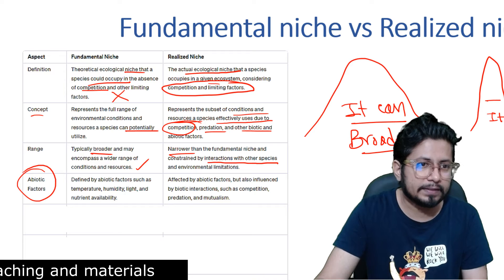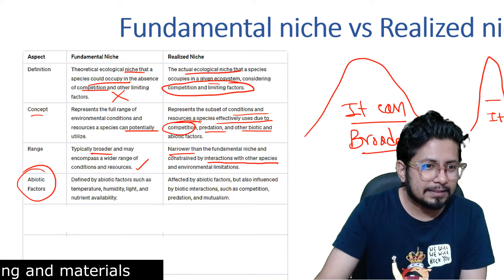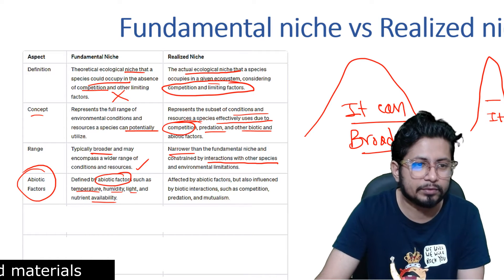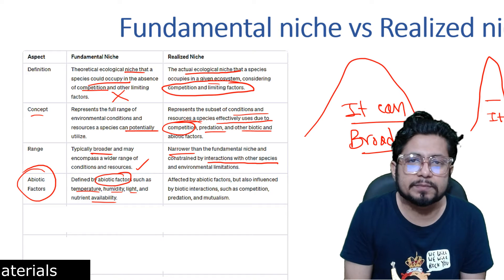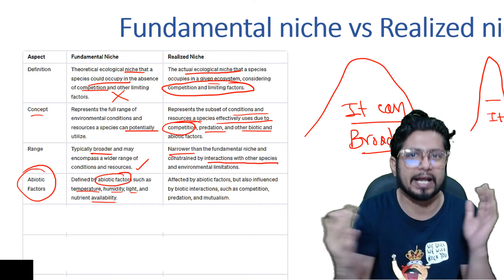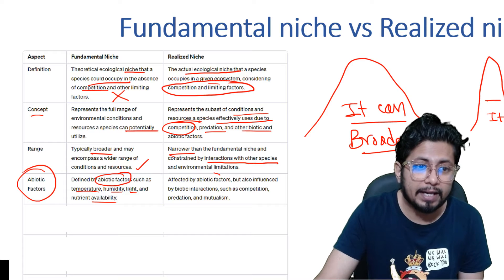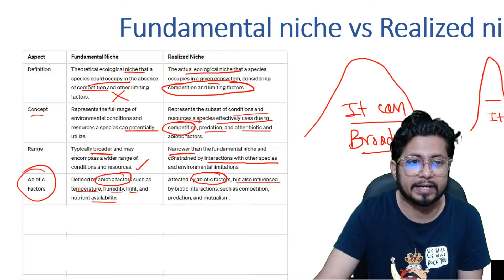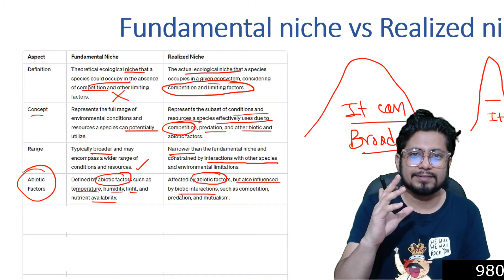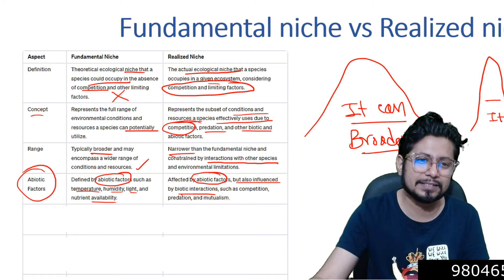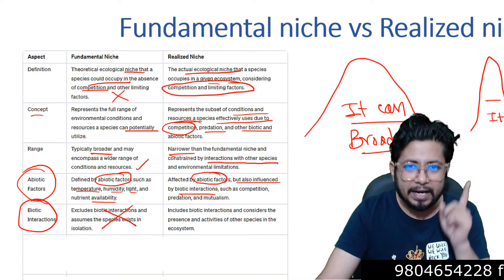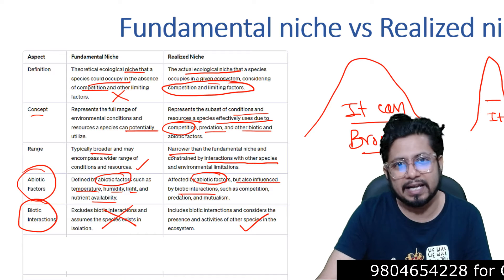Regarding abiotic factors: fundamental niche is defined by abiotic factors such as temperature, humidity, light, and nutrient availability. These abiotic factors regulate the fundamental niche because there is no competition assumed, so no biotic interactions are considered. In realized niche, we must take both abiotic and biotic factors into consideration. Abiotic factors are still important, but interactions from other species mean biotic factors also play an important role. Biotic interactions are absent in fundamental niche but matter a lot in realized niche.